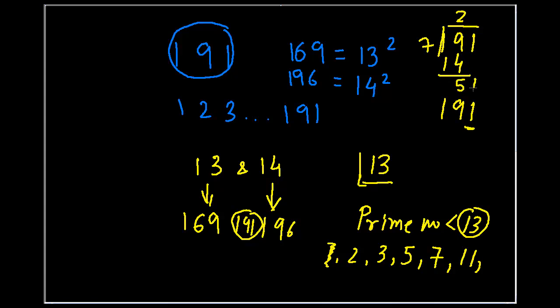9 minus 4 leaves 5. 7 into 7 is 49, and still there is some remainder, so it's not divisible by 7. And then 11. Obviously it's not divisible by 11 too. As it is not divisible by all these prime numbers that are below 13, hence this number is also a prime.